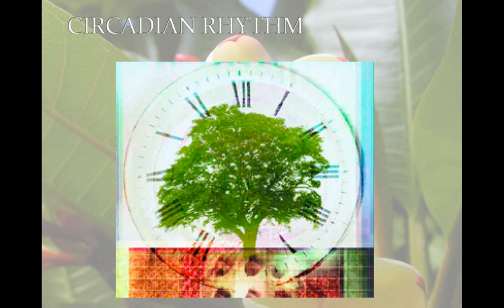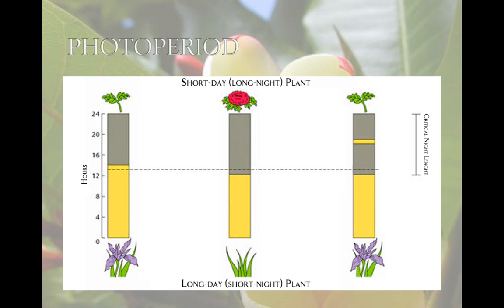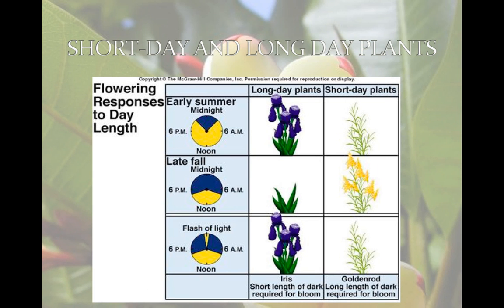Circadian rhythm is a 24-hour biological clock. It exists without environmental cues, and circadian rhythms are controlled by biological clocks. The photoperiod is the relative length of day and night, and it is used by plants to detect the time of year. Short-day plants flower late in the summer, fall, or winter — poinsettia is an example. Long-day plants flower in late spring and early summer; examples include spinach and irises.